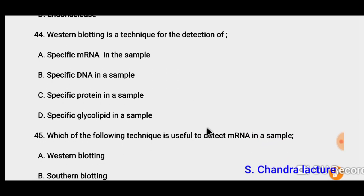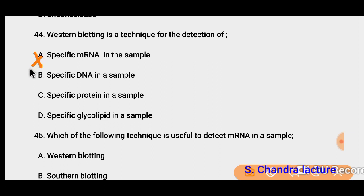Question 44: Western blotting is a technique for the detection of. Western blotting is used to detect specific proteins in a sample. For mRNA, we use northern blotting. For specific DNA in a sample, we use southern blotting.